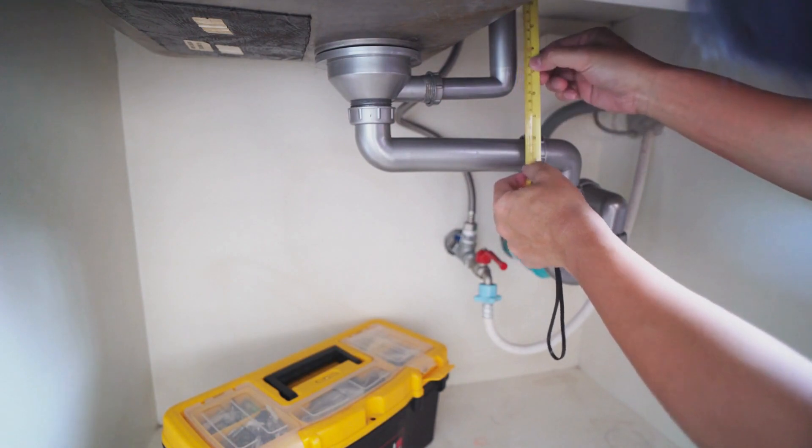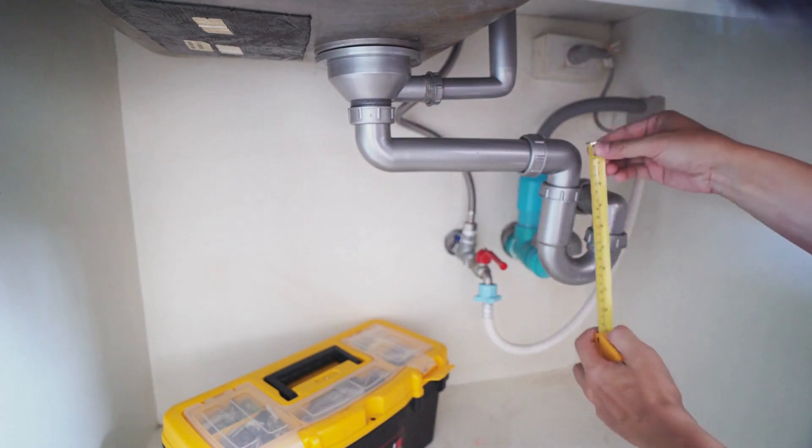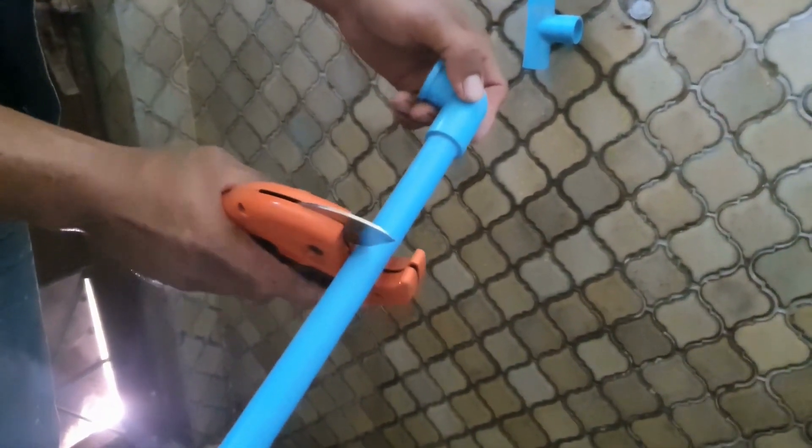Male pipes have grooves on the outside to fit into female pipes, female pipes have grooves on the inside to grip male pipes, no-thread pipes have smooth ends with no grooves. Keep in mind that measuring female pipes requires a slightly different approach.